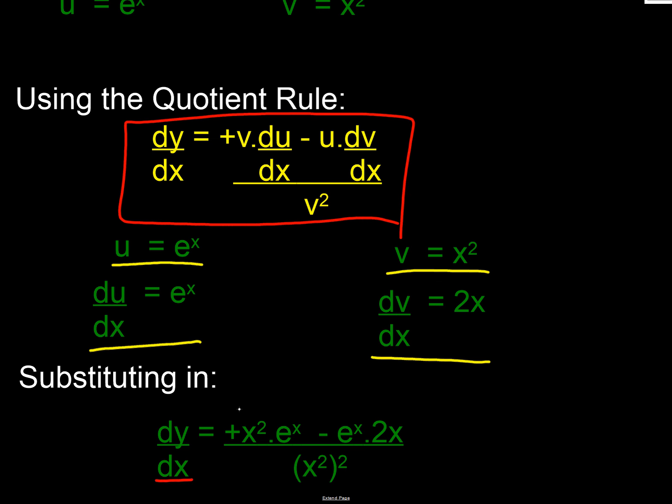Therefore, dy/dx equals our v, which is x², times our du/dx, which is e^x. Then we subtract e^x (that's our u) times our dv/dx, which is 2x. Then we divide the whole lot by v², and v is x², so that squared is x⁴.